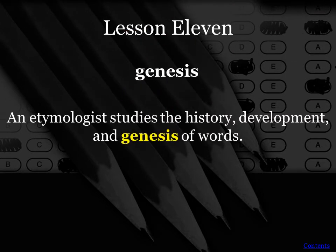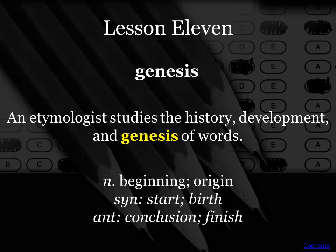An etymologist studies the history, development, and genesis of words. Since you have that biblical background, most likely you can figure this out without even looking at the sentence. But look at those words — history and development — those are going to be your clues. Think of how something develops from the beginning to the end. So Genesis means the beginning or origin of something.